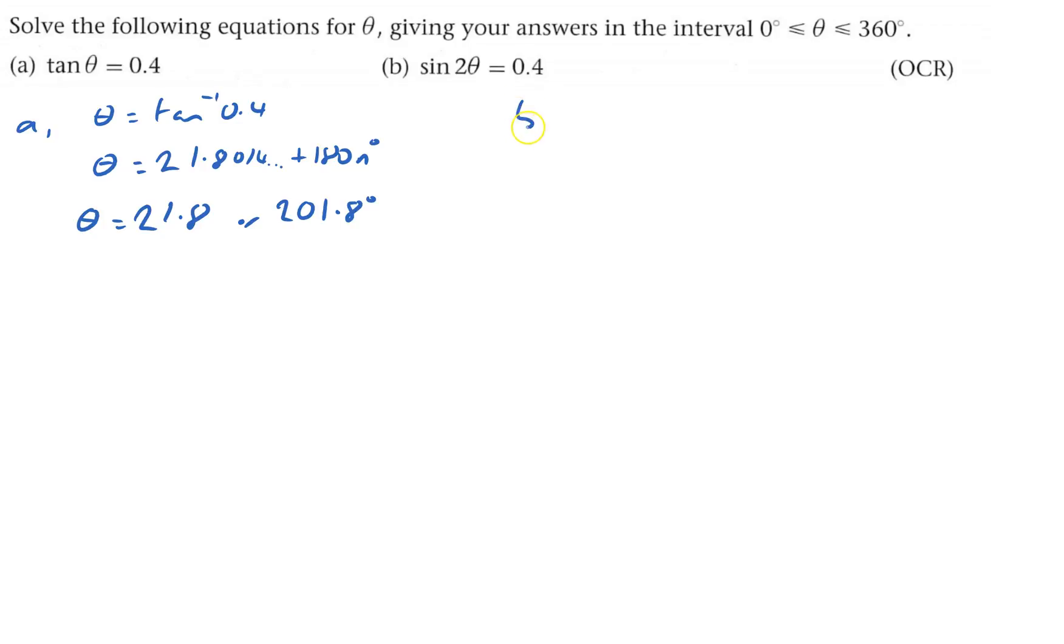Secondly, B, I've got sine of 2 theta equals 0.4. So 2 theta equals sine to the minus 1 of 0.4. And that means 2 theta equals, and that's 23.578.